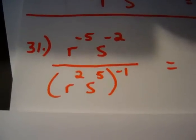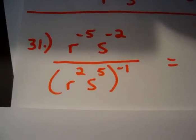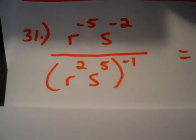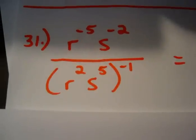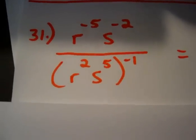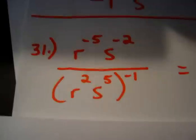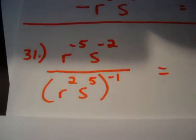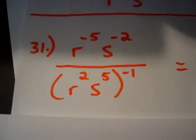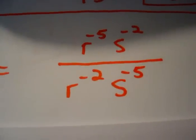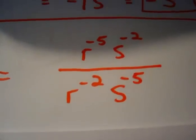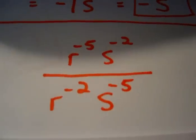The first thing you want to do here is take care of the parentheses where we're raising it to the negative 1 power. That's multiplying a power to a power. You're going to multiply the exponents. Or I'm sorry, I should have said raising a power to a power. Let's take care of that denominator first. When you multiply 2 times negative 1 and 5 times negative 1, you get the following. You get r to the negative 2nd, s to the negative 5th in the denominator. So here is where you should be at in the problem right now.